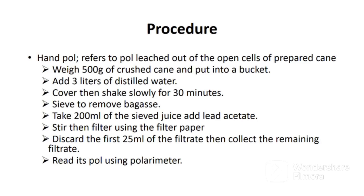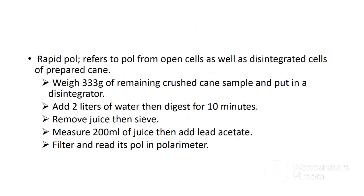After 30 minutes, sieve the juice to remove bagasse. Take 200 ml of the sieved juice and add lead acetate. Stir, then filter using filter paper. Discard the first 25 ml of the filtrate, then collect the remaining filtrate. Read the pole of this filtrate using the polarimeter.